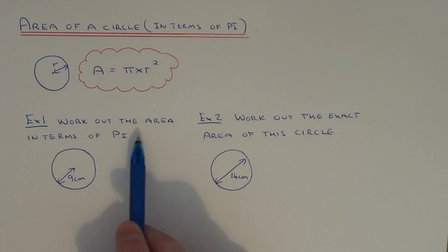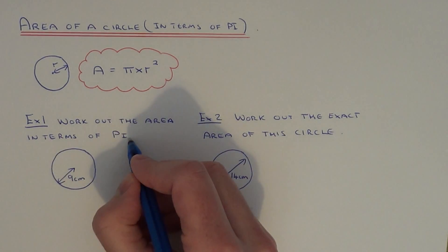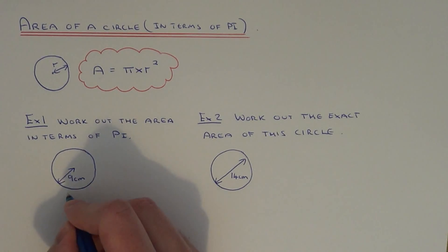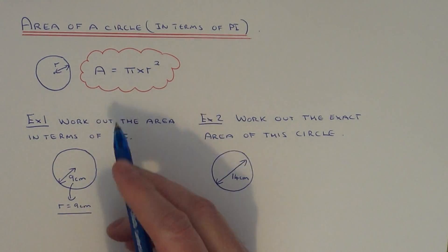Let's look at example one. We've got to work out the area of this circle in terms of pi. This circle has a radius of 9, so we just have to substitute this into our formula.